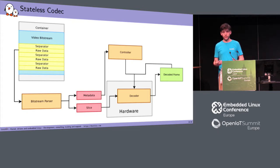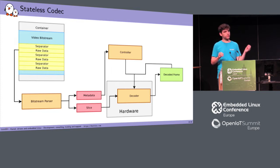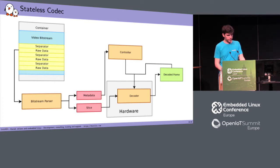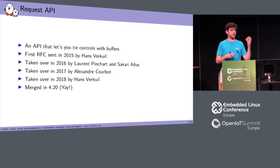There was an API in V4L2 to change controls, but it was completely separated from the buffers themselves. You couldn't synchronize control changes to a specific buffer, and with stateless codecs you need to change controls in lockstep with each buffer. This led to work on something called the Request API, which allows you to combine control changes in lockstep with the buffers themselves.